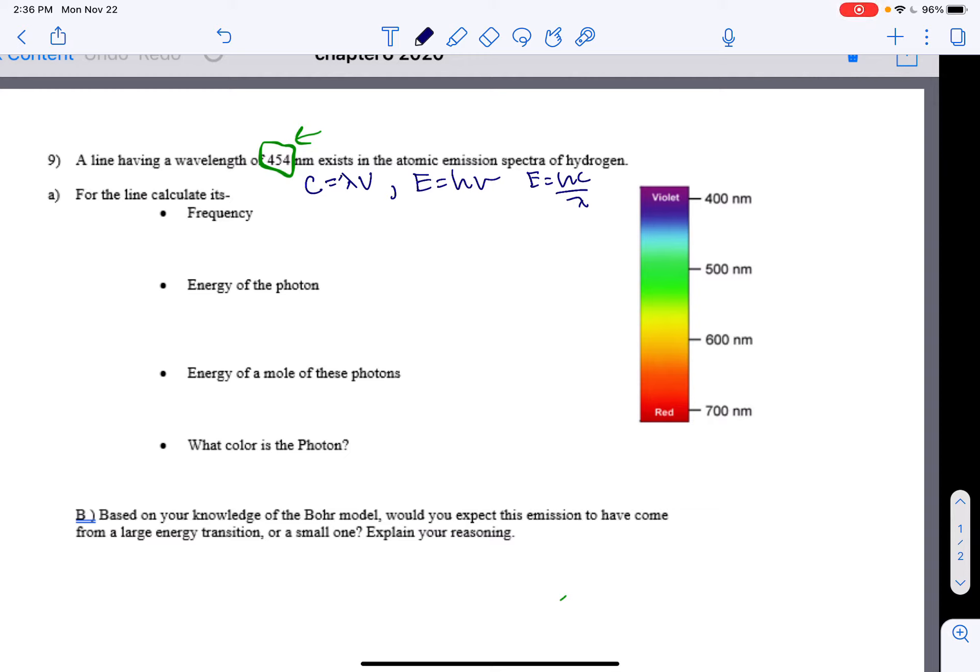All right, didn't really get too far into this today. Let me do this example for you. It's the same situation you'll see on the test, like exactly. I give you the wavelength already here in this green box, 454 nanometers.